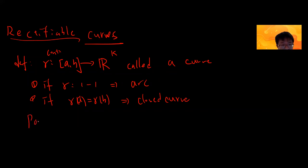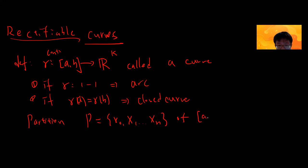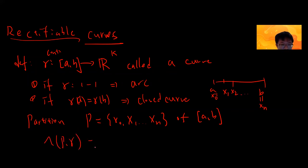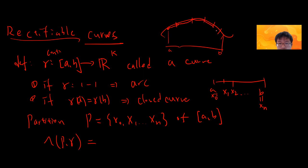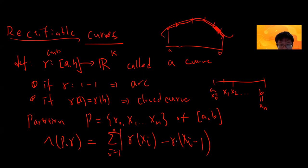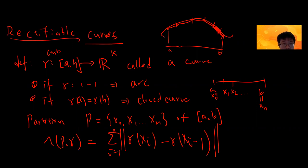Given any partition x_0, x_1, up to x_n of [a,b], you separate the curve into different arcs and compute the distance between them — the straight line distance. This is defined as the sum from i=1 to n of |gamma(x_i) - gamma(x_{i-1})|, the Euclidean distance between points in k dimensions.